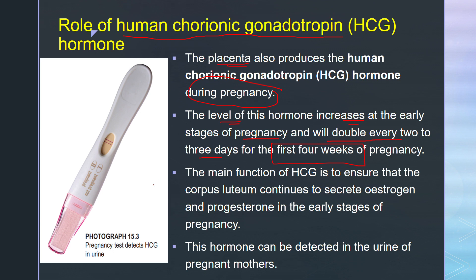That's why when women check whether they are pregnant or not, they go to a pharmacy to buy a test strip and then dip it into the urine. This is a pregnancy test used to detect HCG in the urine.